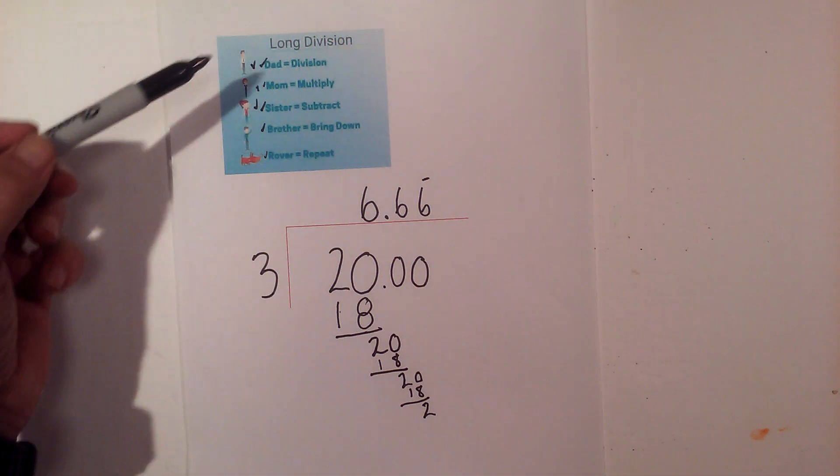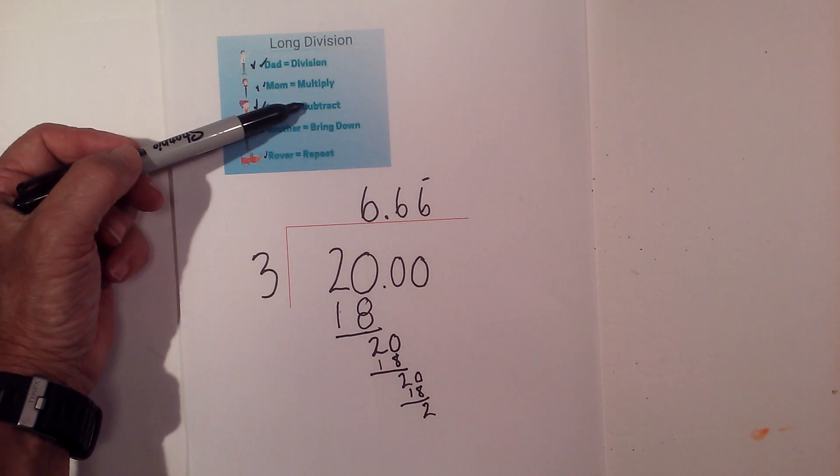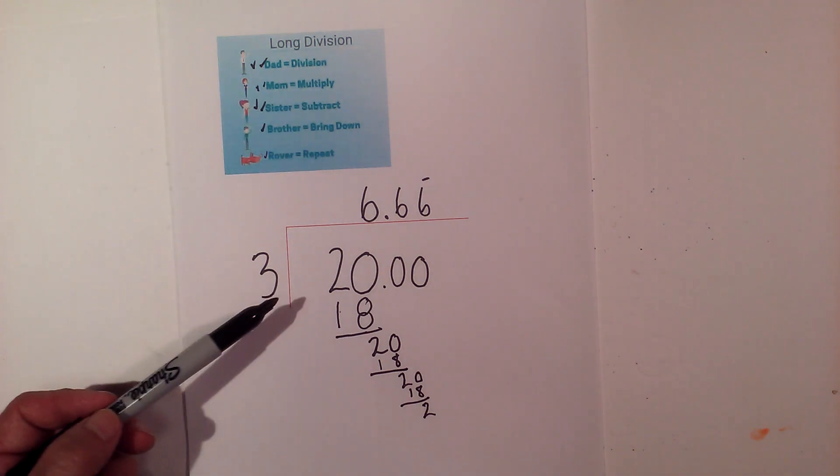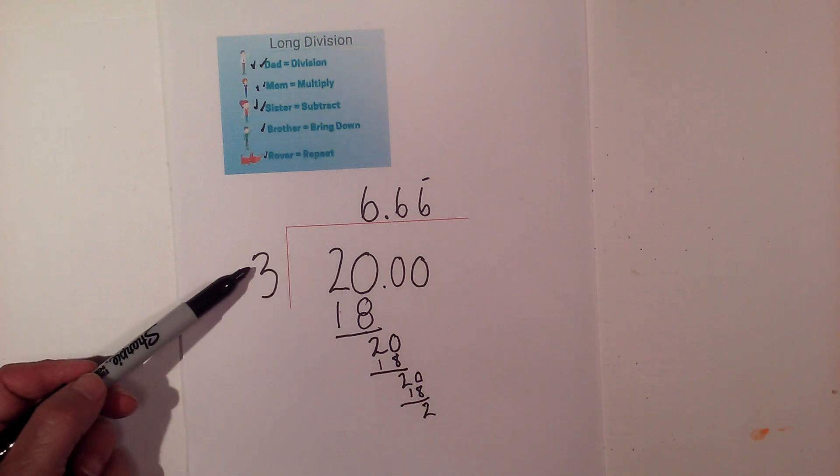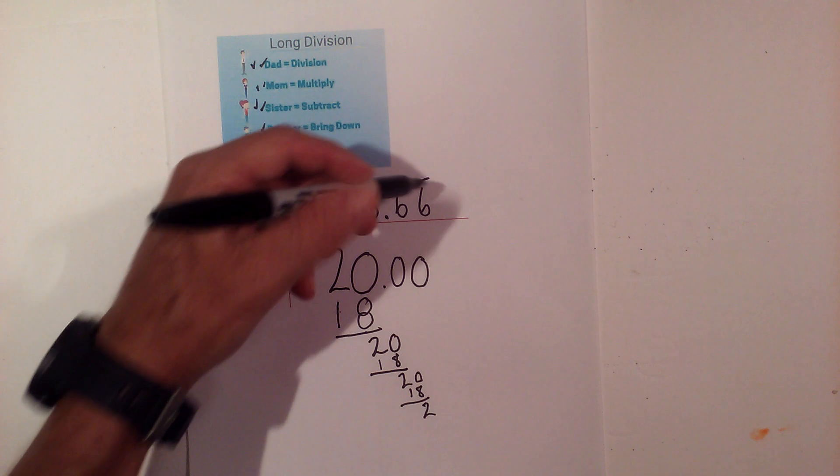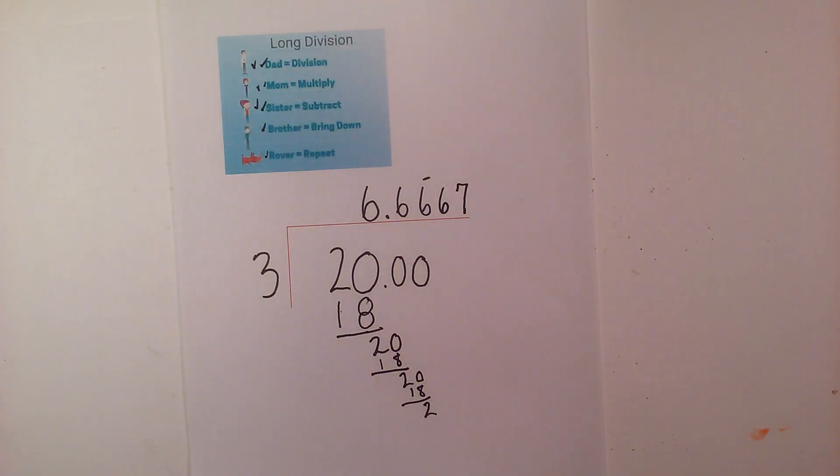I went through the steps of long division. You divide, then you multiply, then you subtract, then you bring down, and then you repeat. So the answer of 20 divided by 3 is 6.66. It's going to continue. It would continue, and eventually I could round the 6 up to a 7. Thanks for watching, and Moomoo Math uploads a new math and science video every day. Please subscribe and share.